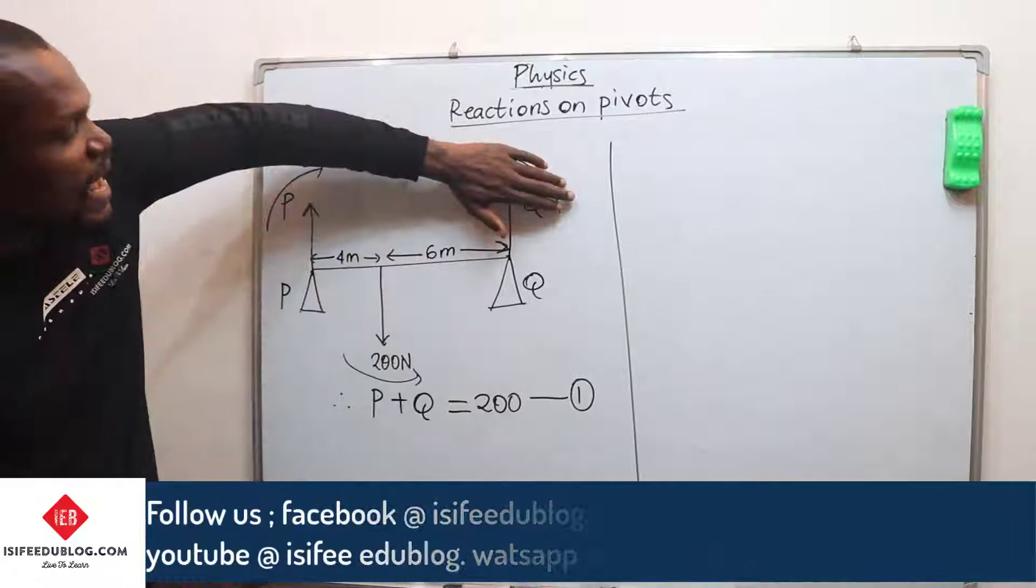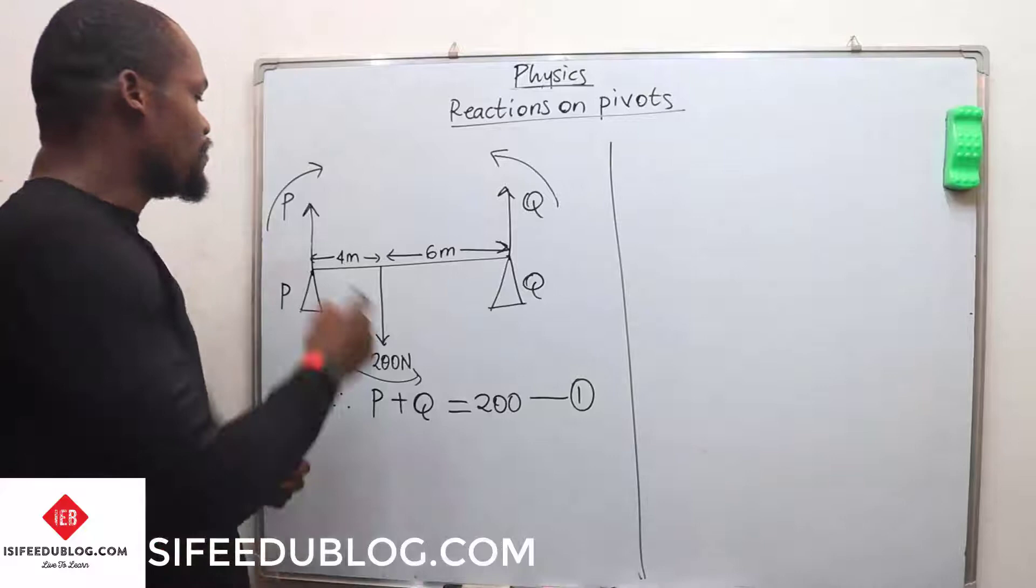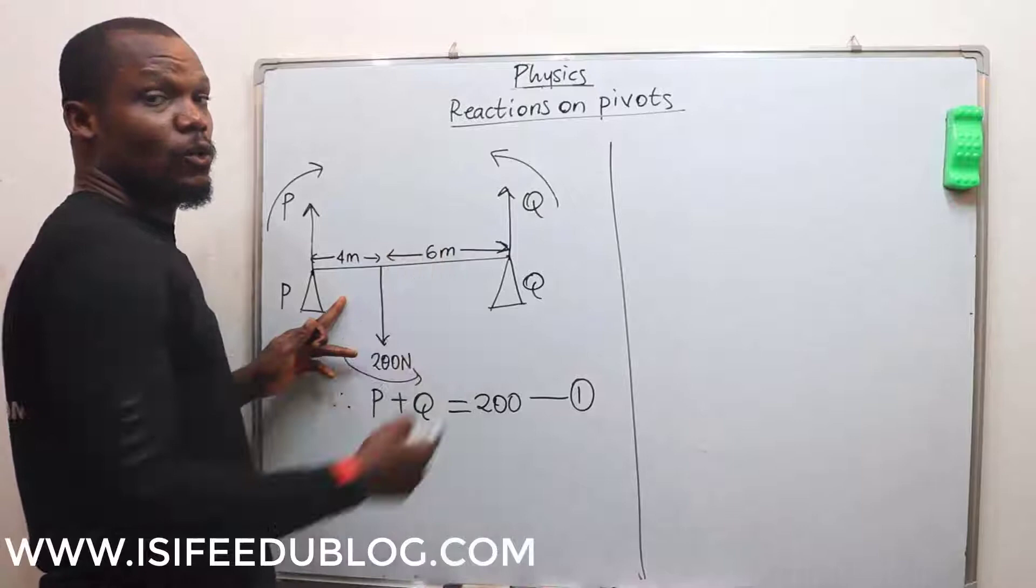We now have only two forces: P and 200. What is the distance of P from this turning point? It is 4 plus 6, which is 10. And what is the distance of 200 from the turning point? It is only 6.